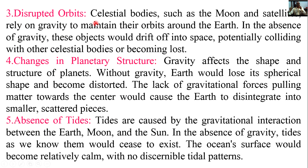Number three: disrupted orbits. Celestial bodies such as the moon and satellites rely on gravity to maintain their orbits around the Earth. In the absence of gravity, these objects would drift off into space, potentially colliding with other celestial bodies or becoming lost. Number four: changes in planetary structure. Gravity affects the shape and structure of planets. Without gravity, Earth would lose its spherical shape and become distorted. The lack of gravitational forces pulling matter towards the center would cause the Earth to disintegrate into smaller scattered pieces.